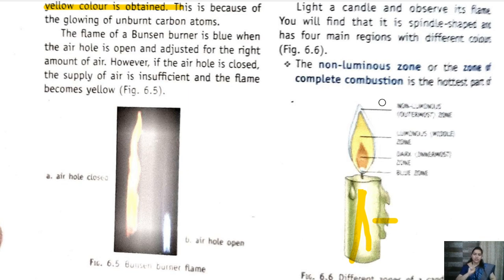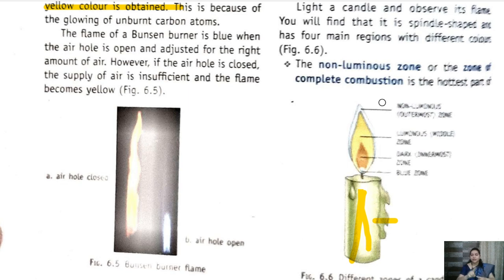Oxygen is present in the atmosphere, so the outer layer will get a sufficient amount of oxygen. The outermost layer of the candle will get sufficient oxygen, and hence the color of the flame will be blue. Blue flame means non-luminous, so the outer portion is non-luminous and blue in color.